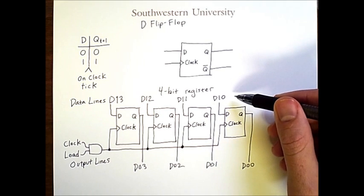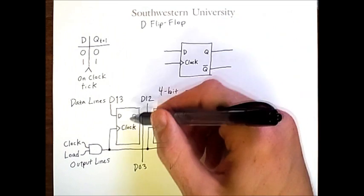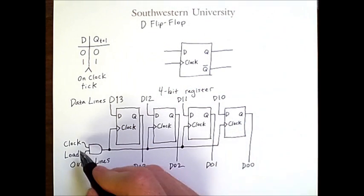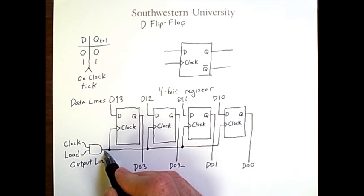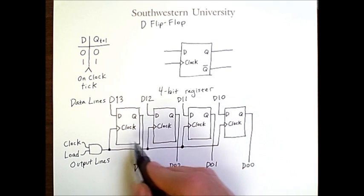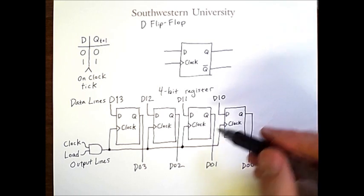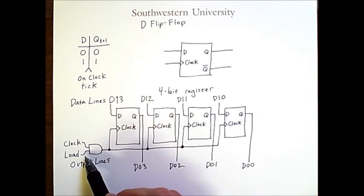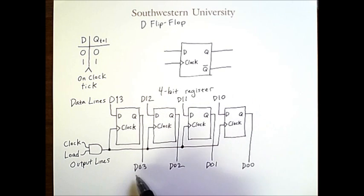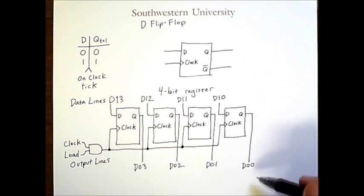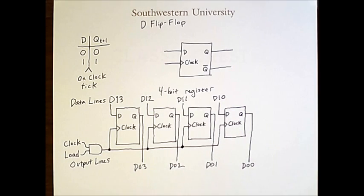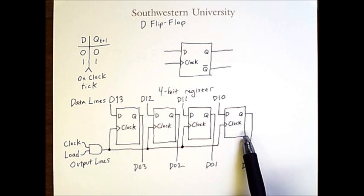The new value to be loaded in will come along the data lines. Then, when the clock ticks to one, the one-and-one at the AND gate sends a one through all of the clock inputs, and the waiting values are loaded in simultaneously. From that point forward, until the next time a load is signaled along with a clock tick, the output lines will continue to have those same values. This simple 4-bit register can be extended to more bits by simply adding more D flip-flops.